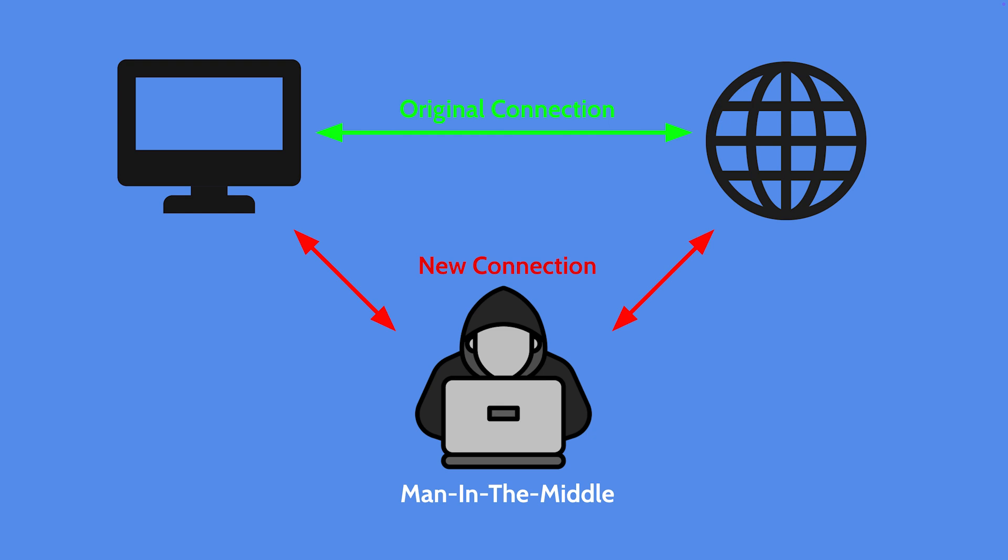To give you a visual of what this looks like: here is your computer connecting to the internet — that original connection. When this connection is vulnerable, a man-in-the-middle attack can occur. A hacker will redirect to a new connection, so rather than your computer connecting directly to the internet, it is routing through this man-in-the-middle, who is able to see all communications going back and forth.